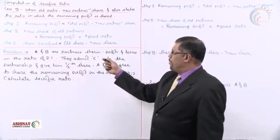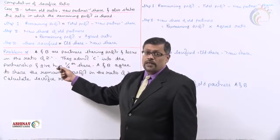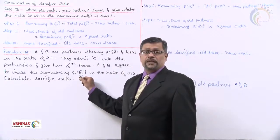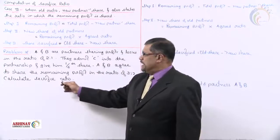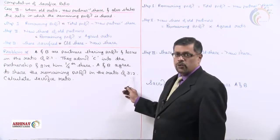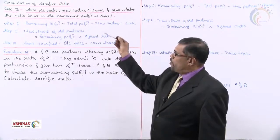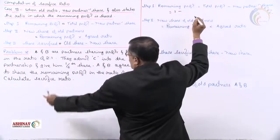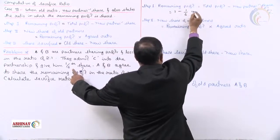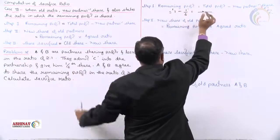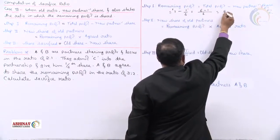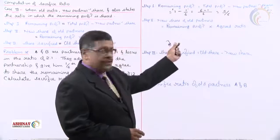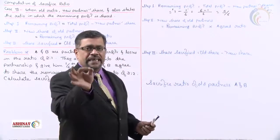Problem 16: A and B are partners sharing profits and losses in the ratio of 2:1 (old ratio). They admit C into the partnership and give him one-sixth share. A and B agree to share the remaining profits in the ratio of 3:2 (agreed ratio). Step 1 — remaining profit: 1 minus 1/6 = 6/6 minus 1/6 = 5/6.